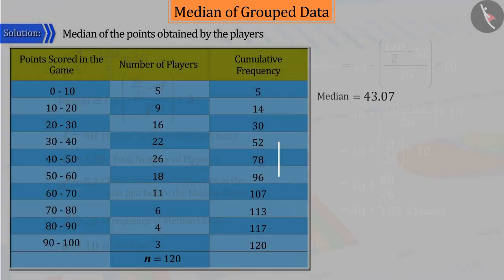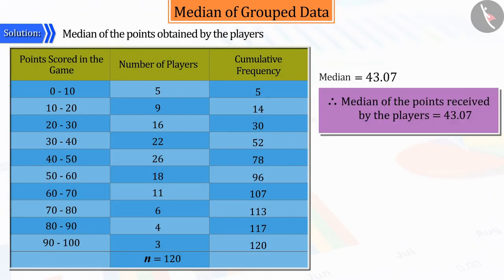So, we can say that the median of the points obtained by the players is 43.07. This means that approximately 50% of the players have got points less than or equal to 43.07.